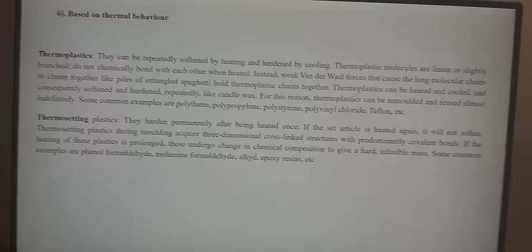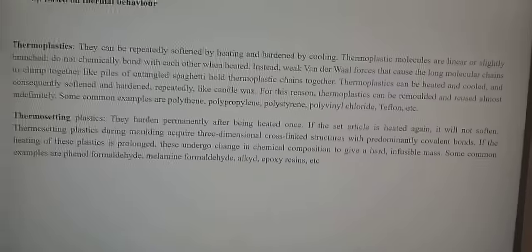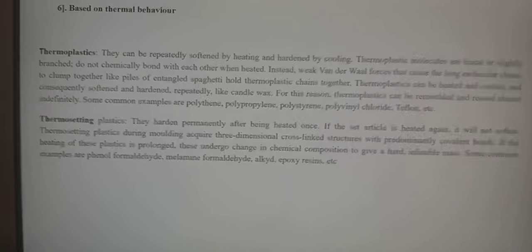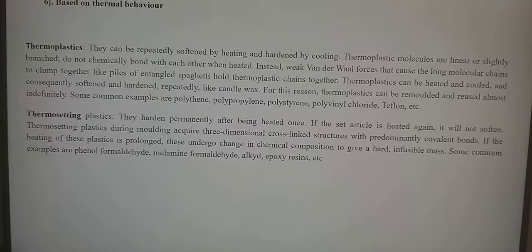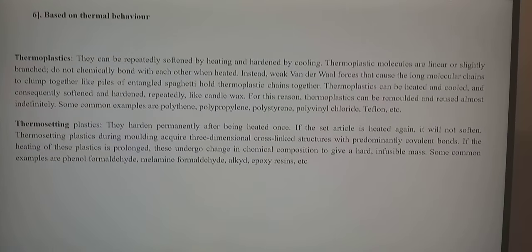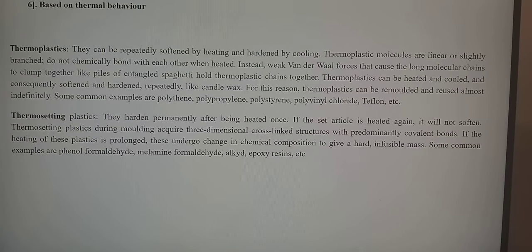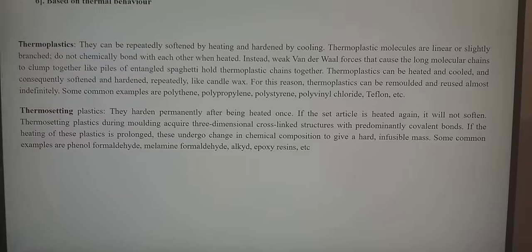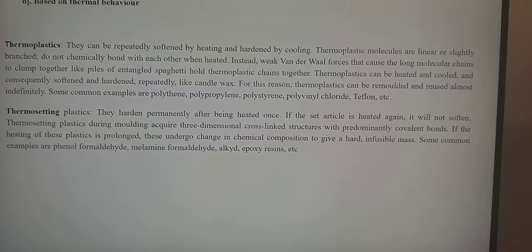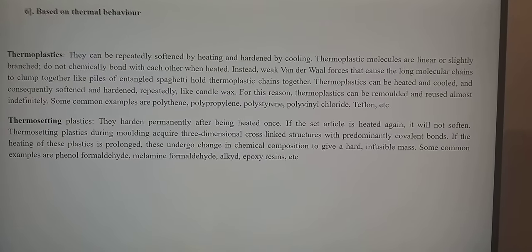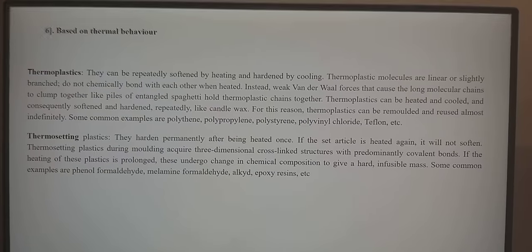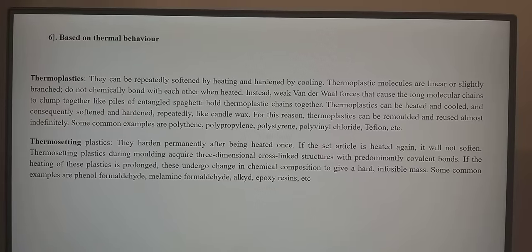The next category is based on thermal behavior. Depending upon thermal behavior, polymers are divided into two categories: thermoplastics and thermosettings. Thermoplastics can be repeatedly softened by heating and hardened by cooling. They are linear or slightly branched and do not chemically bond with each other. Instead, weak Van der Waals forces cause the long molecular chains to clump together, holding thermoplastic chains together.